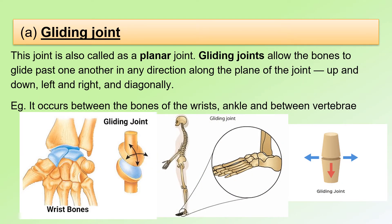Now, let's look at the first type of synovial joint, the gliding joint. This joint is also called a planar joint. Gliding joints allow the bones to glide past one another in any direction along the plane of the joint — up and down, left and right, and diagonally. It occurs between the bones of the wrists, the ankle, and between the vertebrae.